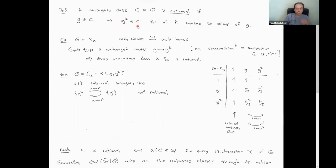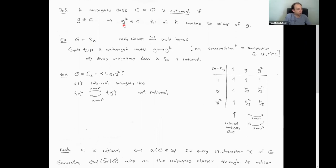For a non-rational example, take the cyclic group C3: it has three conjugacy classes {1}, {g}, {g²}. Squaring an element (which is coprime to 3) swaps the classes {g} and {g²}, so neither is rational. There's a nice lemma: a conjugacy class is rational if and only if every irreducible character takes an integer (rational algebraic integer) value on it. So you can spot rational classes in the character table — they correspond to columns with all integer entries.